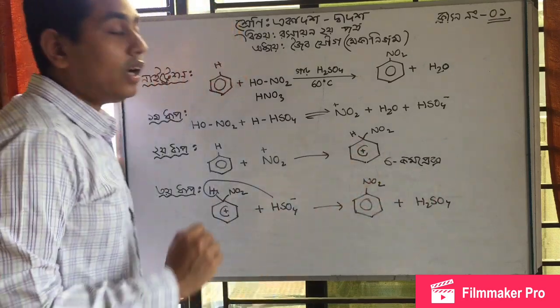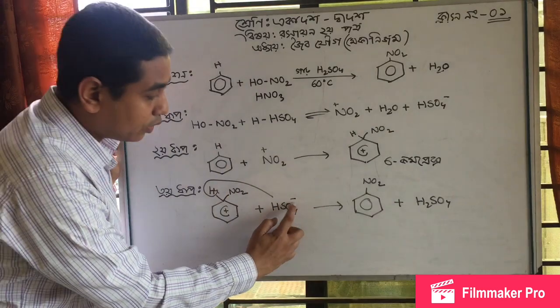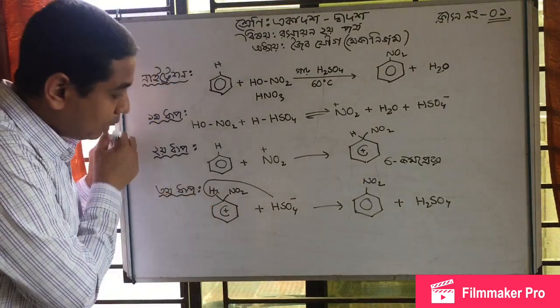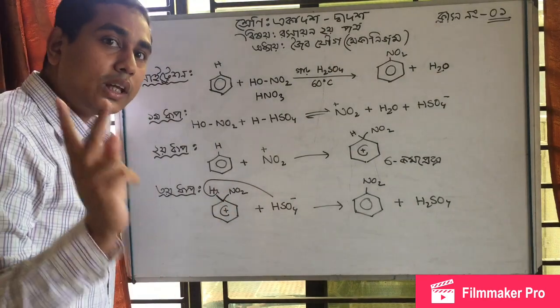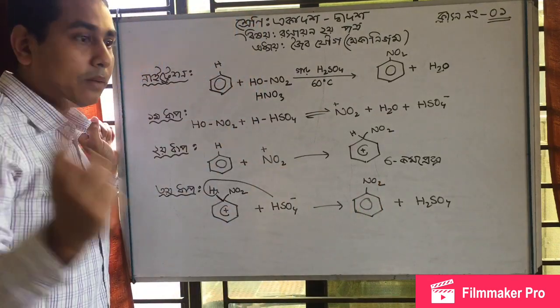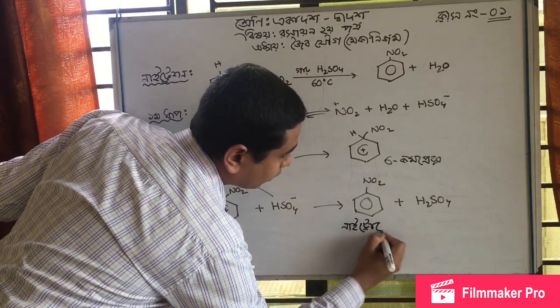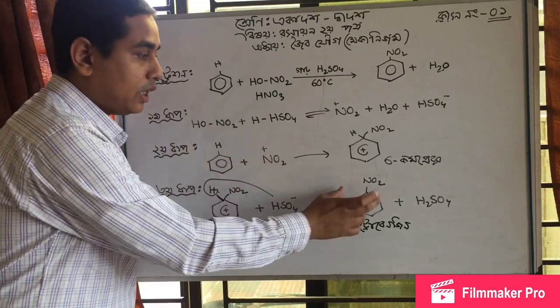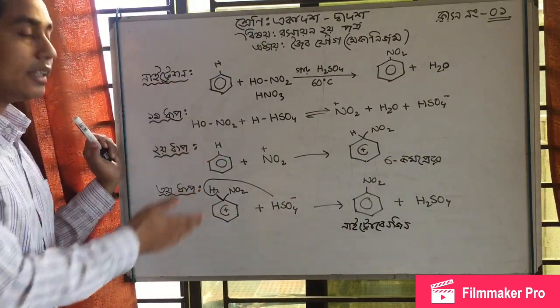The sigma complex forms first. The bisulfate removes a proton from the complex. The products are nitrobenzene and sulfuric acid. The reaction produces nitrobenzene as the main product.